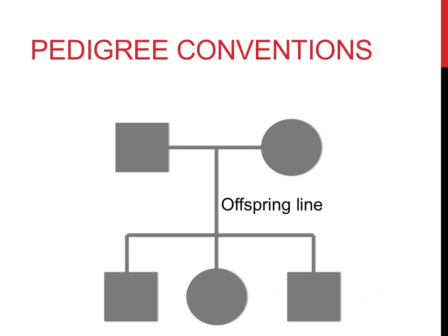Vertical lines can be referred to as offspring lines. They indicate which individuals were produced from which two parents. They might also be referred to as a bloodline, indicating which individuals are related by blood.